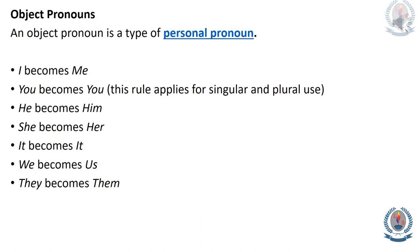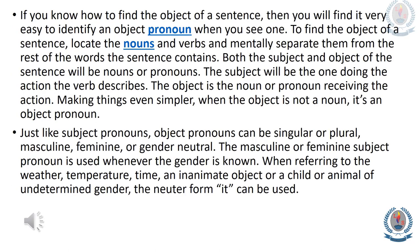Object pronouns. An object pronoun is a type of personal pronoun. I becomes me. You becomes you — this rule applies both for the singular and plural uses. He becomes him. She becomes her. It becomes it. We becomes us. They becomes them. Just like subject pronouns, object pronouns can be singular or plural, masculine, feminine, or gender neutral.